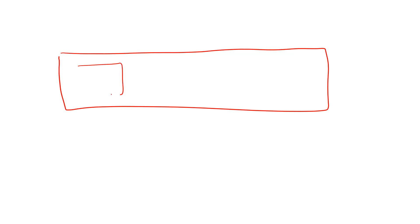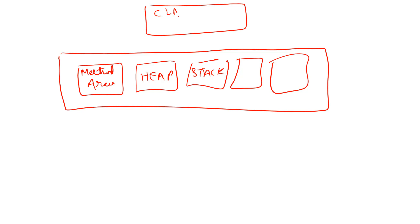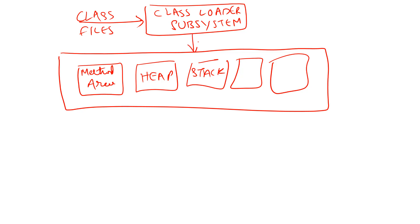JVM contains a method area, heap memory, and stack memory. Whenever we want to execute a program, there will be a class loader subsystem. This class loader subsystem will load the class files into JVM. Whenever these class files are loaded, then the static variables will be allocated with memory.